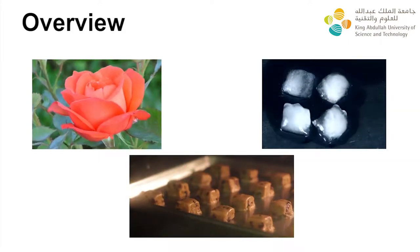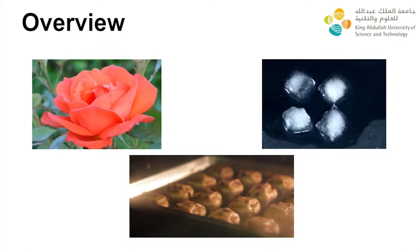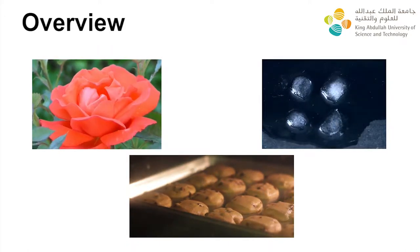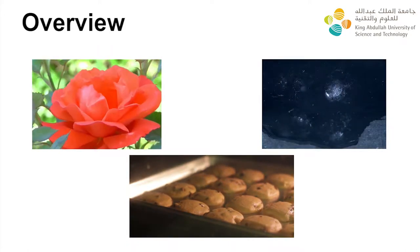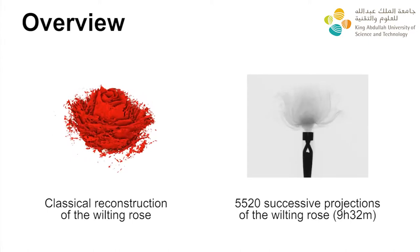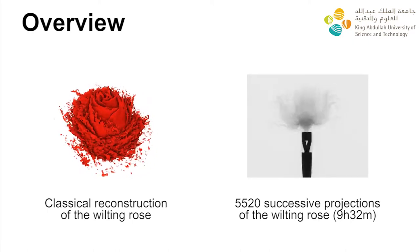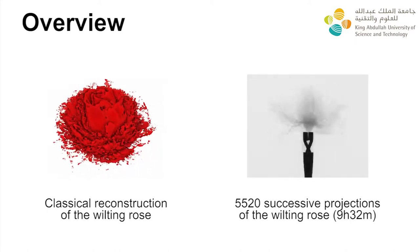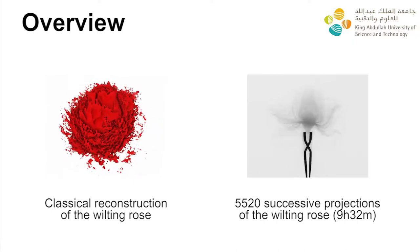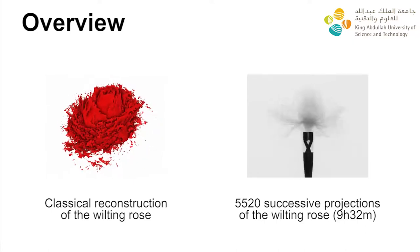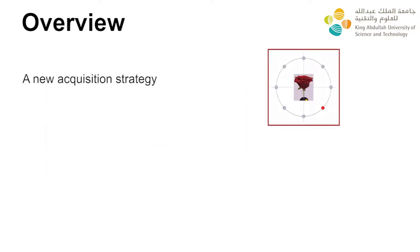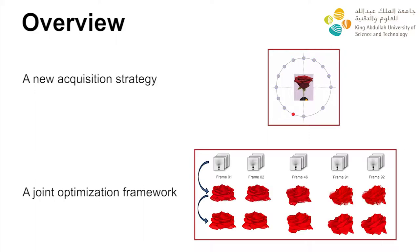For deforming objects or phenomena, static reconstruction tomography is unable to provide a good reconstruction. For this wilting rose, the moving petals are badly reconstructed using static reconstruction. We propose a non-parametric space-time tomography method based on a new acquisition strategy and a multi-scale joint optimization framework that alternates between estimating a deformation field and updating a density volume.